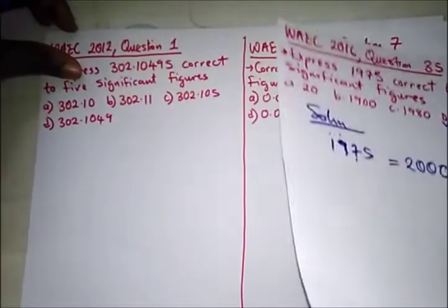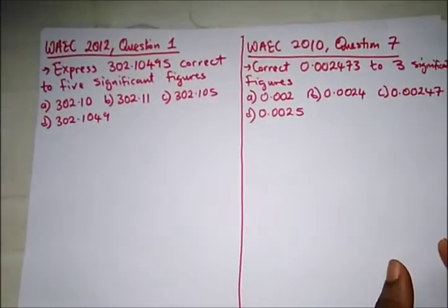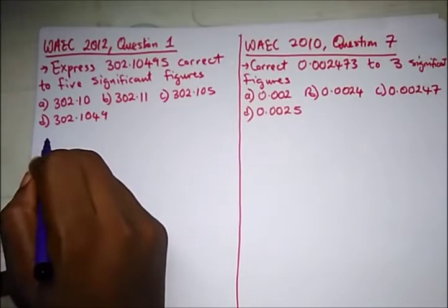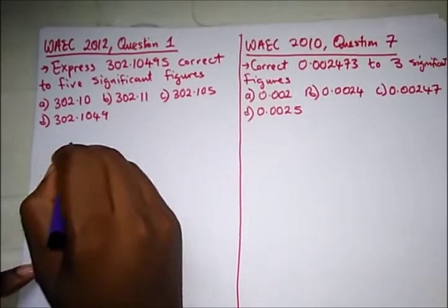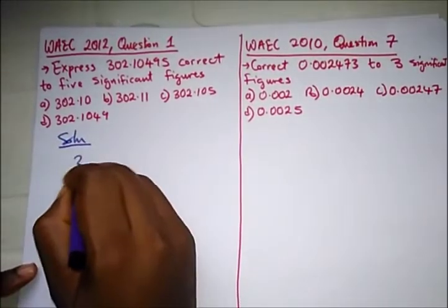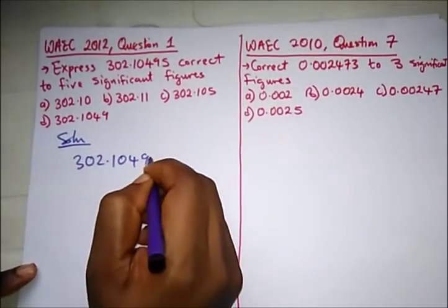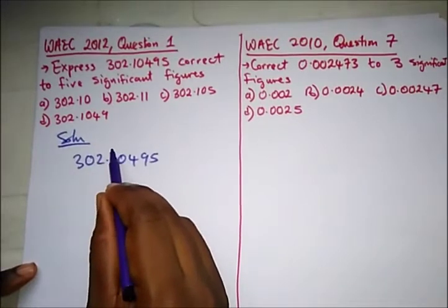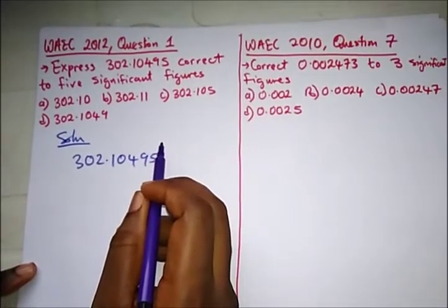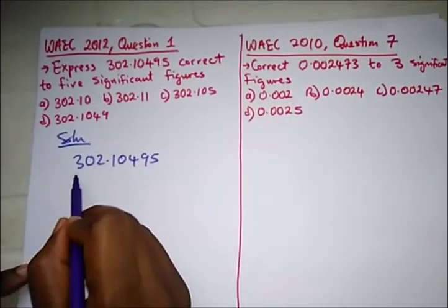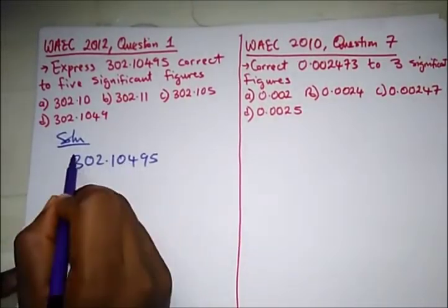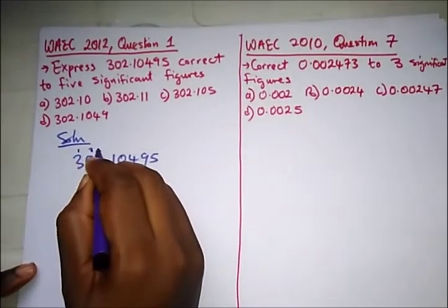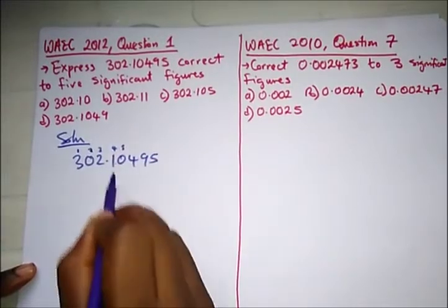We have another question here from WAEC 2012. It says: express 302.1049 correct to five significant figures. Let's write this down. Some people might confuse this with decimal places by starting to count from the decimal point — one, two, three, four, five. No, please don't do that. For significant figures, we start from the non-zero value, and three is a non-zero value, so we start our count from here: one, two, three, four, five.